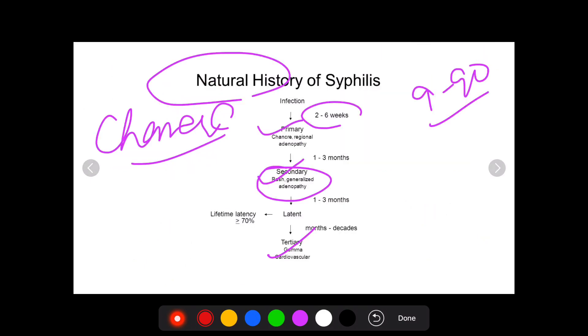After the rash and lymphadenopathy, the person goes into a phase known as a latent phase. The patient can be said to have early latent syphilis when the entire duration of symptom is less than two years. Or he can be said to have late latent syphilis when it's more than two years.